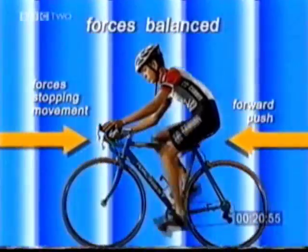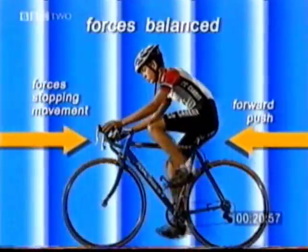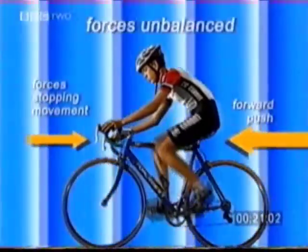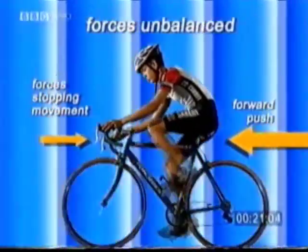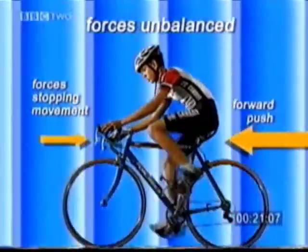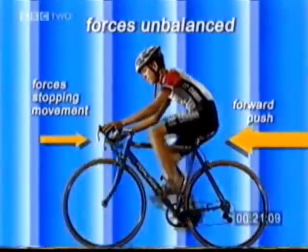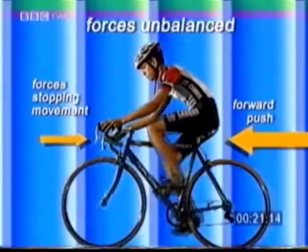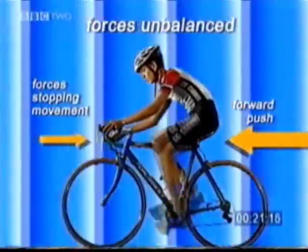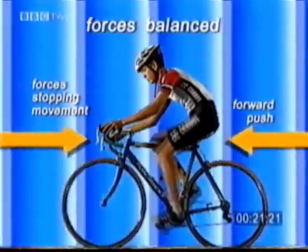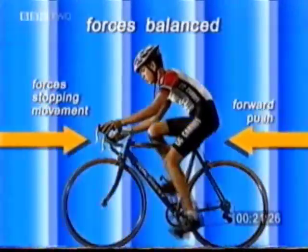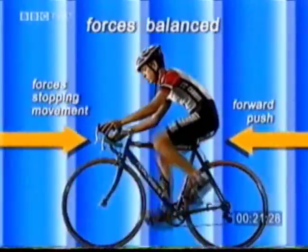A change in movement will only happen when the forces become unequal or unbalanced. So when the cyclist wants to speed up, the forward force is increased to become bigger than the forces opposing movement, and the bike speeds up. The object continues to accelerate until the forces working against the forward movement are again equal to the forward force. The forces are then balanced again, and the object moves at a constant speed once more.